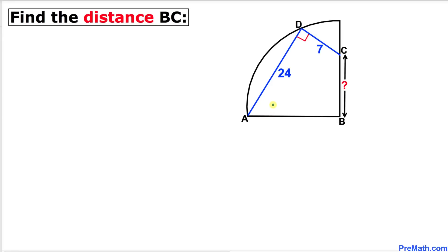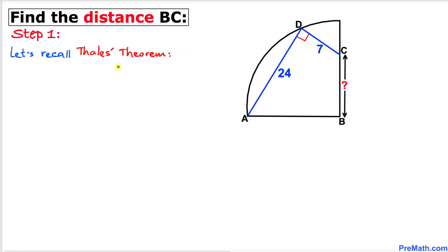Welcome to Pre-Math. In this video tutorial we have a quarter circle, with two line segments AD and CD that are perpendicular to each other. The length of line segment AD is 24 units and the length of line segment CD is 7 units. We are going to calculate the distance BC, so let's get started with the solution.